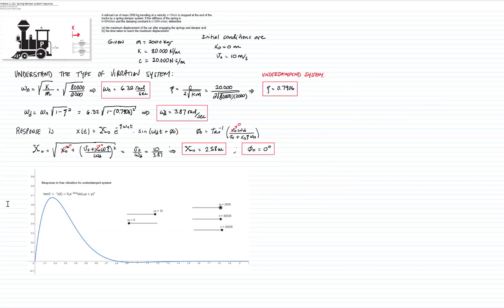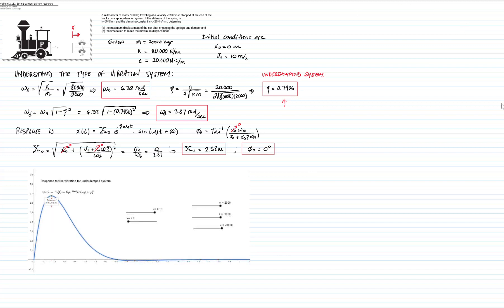If we graph the response, we see there is a peak followed by an overshoot, and then the system returns toward the equilibrium position. The system oscillates, but it only goes once below the equilibrium position because the damping coefficient is very high. From the graph, at approximately 0.17 seconds, the amplitude is 0.675 meters. That is the maximum displacement and the time taken to reach it.